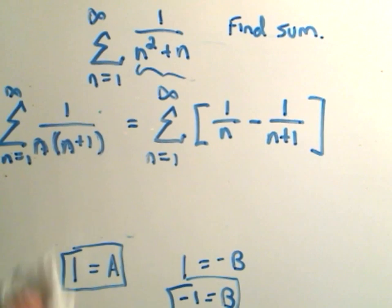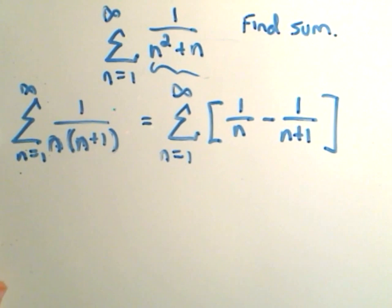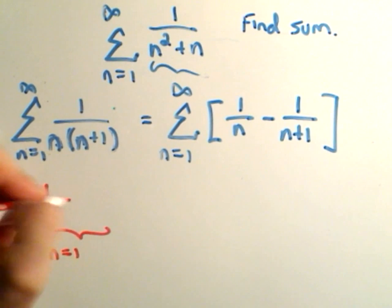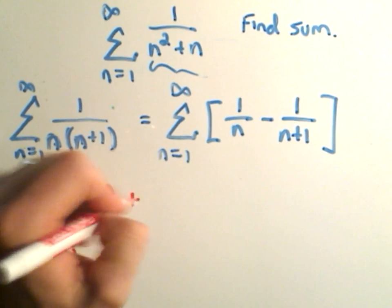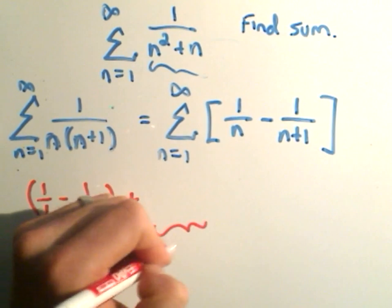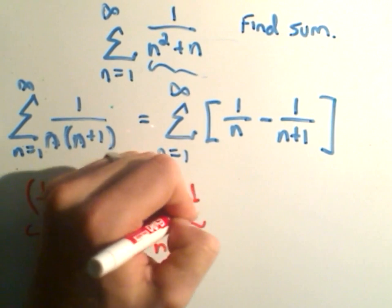So let's start expanding it out and start writing out a few terms of our expansion. And I think you'll see the pattern pretty quickly and can convince yourself what happens. So if we plug in n equals 1, notice we'll get 1 over 1 minus 1 over 2. That'll be my first term. Plus, then I'll have to plug in n equals 2. I'll get 1 over 2 minus 1 over 3.